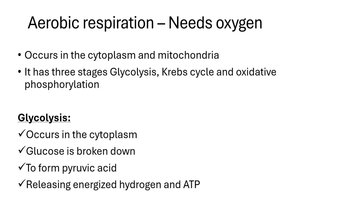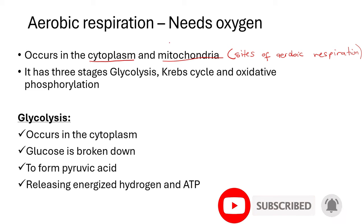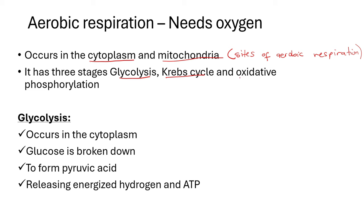Aerobic respiration occurs in the cytoplasm and in the mitochondria of a cell. Remember from grade 10 you know the fluid part known as the cytoplasm as well as the mitochondria — these are the two places where aerobic respiration takes place. If a question asks you what are the sites for aerobic cellular respiration, those are the two sites: cytoplasm and mitochondria. Aerobic respiration has three stages: glycolysis, the Krebs cycle, and oxidative phosphorylation.